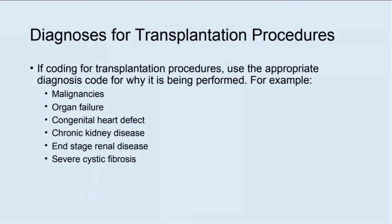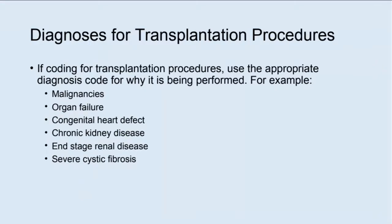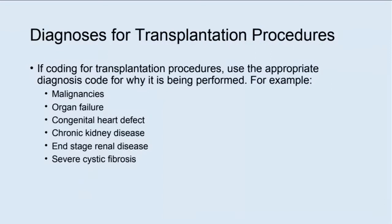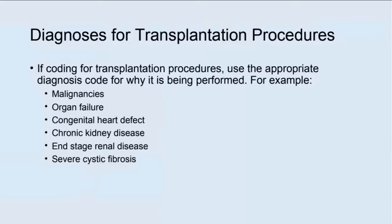Let's start with diagnoses — this is the easy part. The diagnosis matched to a transplant procedure is the reason the procedure is being done. For example, you would code a malignancy if that's the reason. Organ failure, congenital heart defect, chronic kidney disease, end-stage renal disease, severe cystic fibrosis — whatever the reason is that the procedure is being performed.